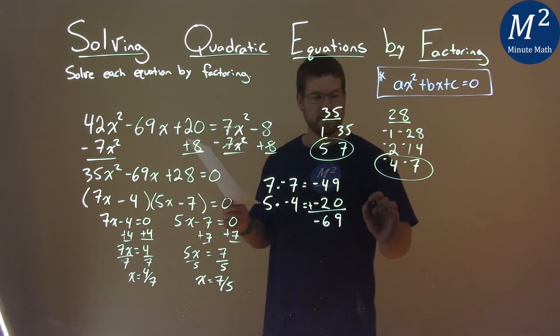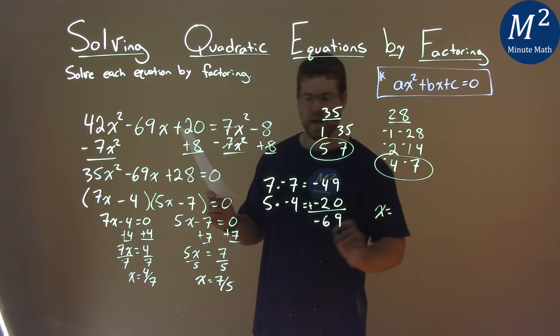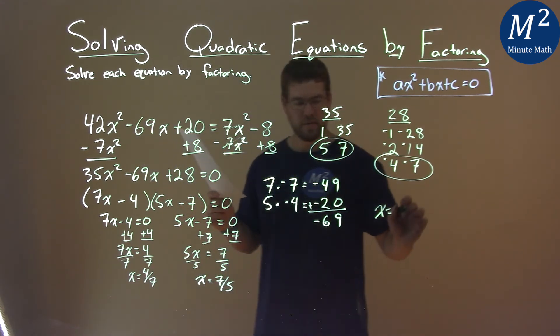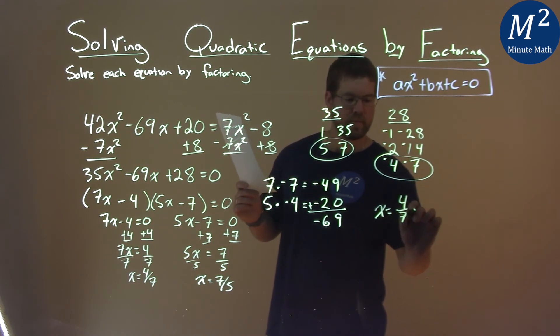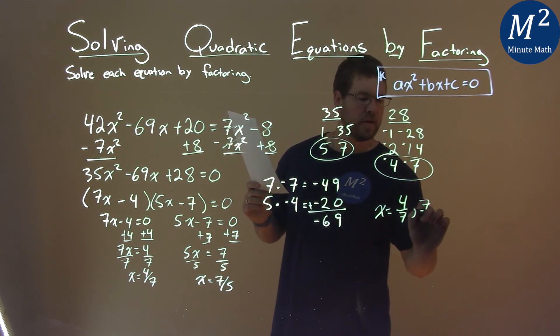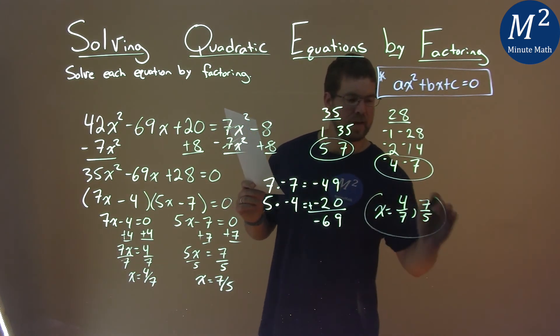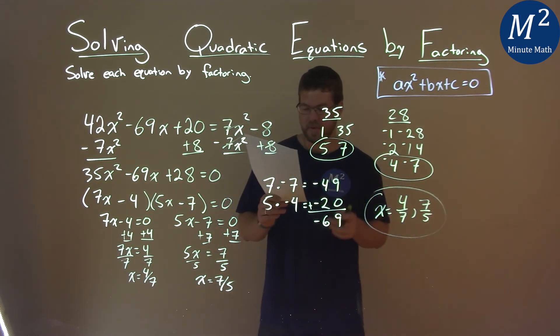So we can write this actually as a single statement: x equals 4 sevenths and 7 fifths. And by combining that together, that is our final answer.